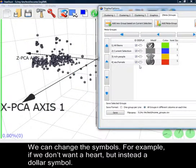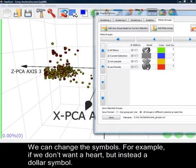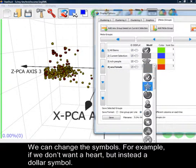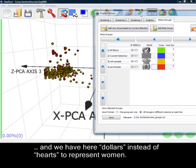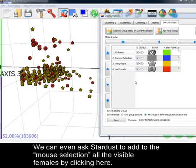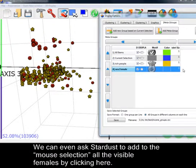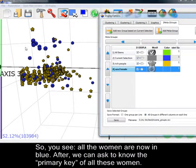We can change the symbols. For example, if you don't want a heart, but instead a dollar symbol. And we have here dollars instead of hearts to represent women. We can even ask Stardust to add to the mouse selection all the visible females by clicking here. So, you see, all the women are now in blue.